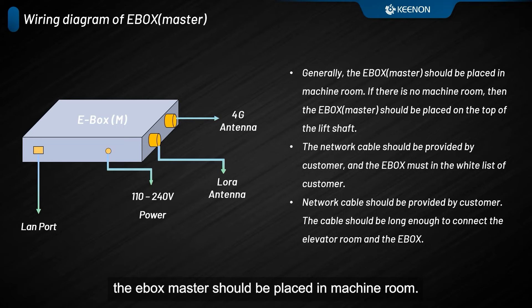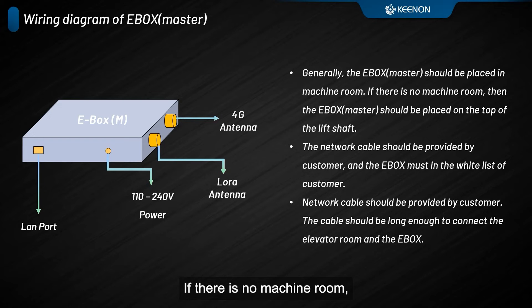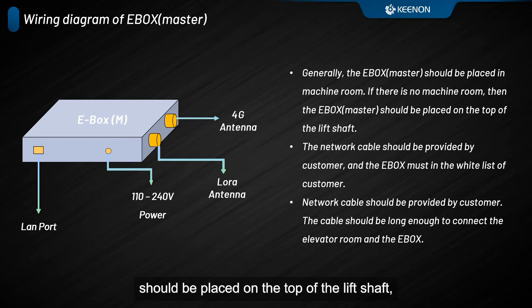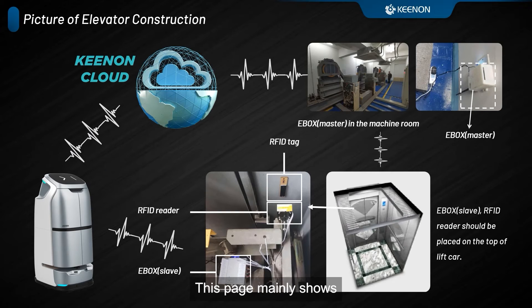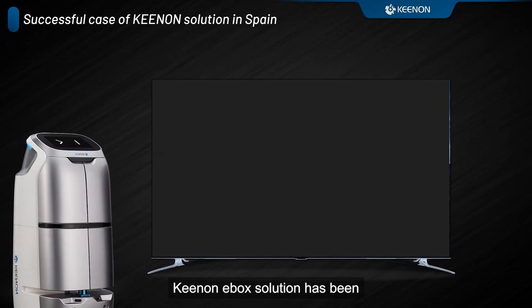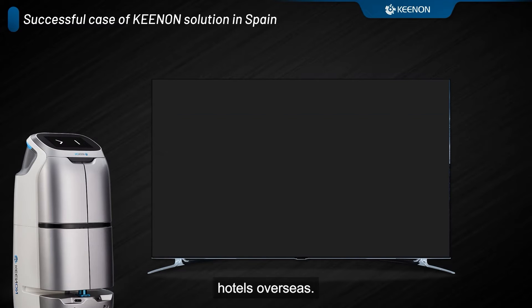This page displays the wiring diagram for the EBOX master. Generally, the EBOX master should be placed in the machine room. If there is no machine room, then the EBOX master should be placed on the top of the lift shaft. The network cable should be provided by the customer, and the EBOX must be on the whitelist of the hotel's network system. This page mainly shows some pictures of our actual installation on site. Kenan's EBOX Solution has been successfully implemented in many hotels overseas.